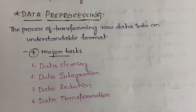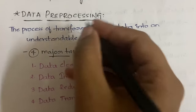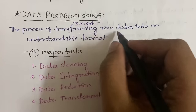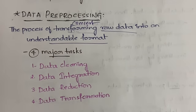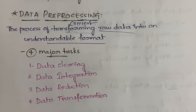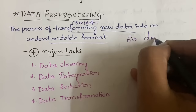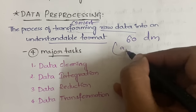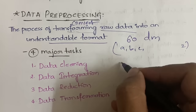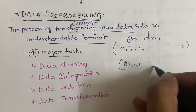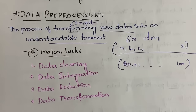Data pre-processing is the process of transforming or converting raw data into an understandable format. For example, if you have the marks of 60 students in a data mining subject, the names might be listed separately and the marks in a random format — making it impossible to tell which student got which mark.